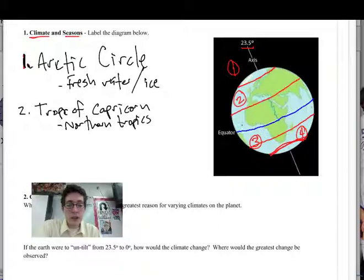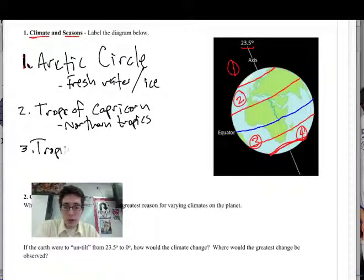And then that third line, the blue line, is the equator. We know where that is. That cuts the earth right in the middle. So latitude zero. Line three that we drew, this is the Tropic of Cancer, like the disease cancer. And these are the southern tropics.